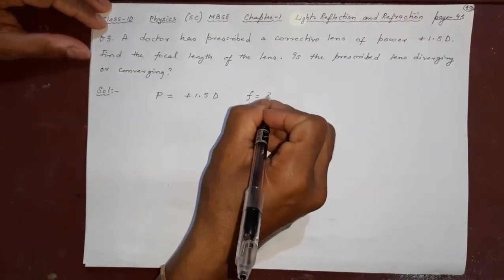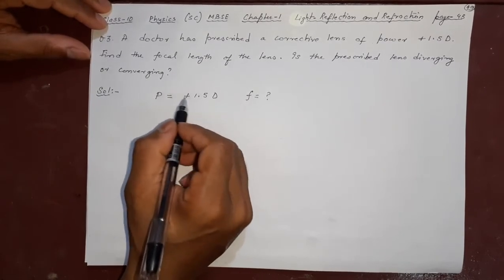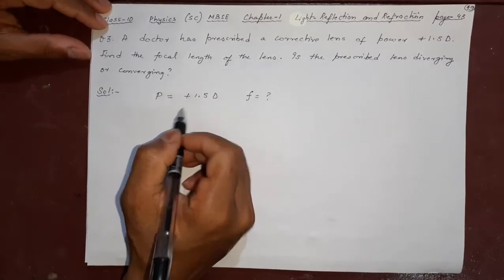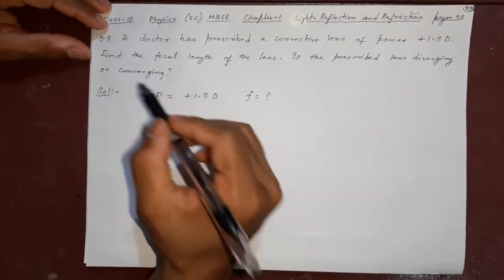F equals what? Remember, the focal length formula is very simple but it is given in meter inverse, not centimeter. That is the only thing important. Is the prescribed lens diverging or converging?